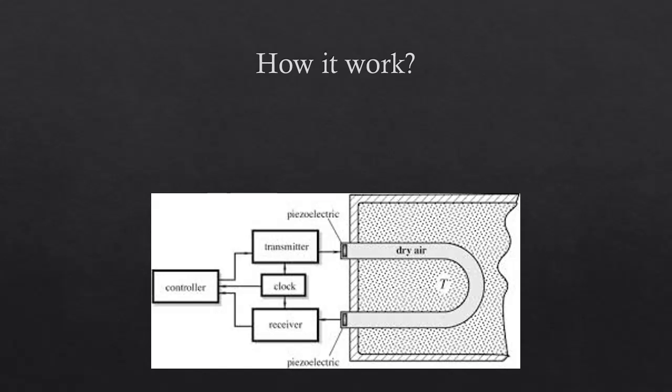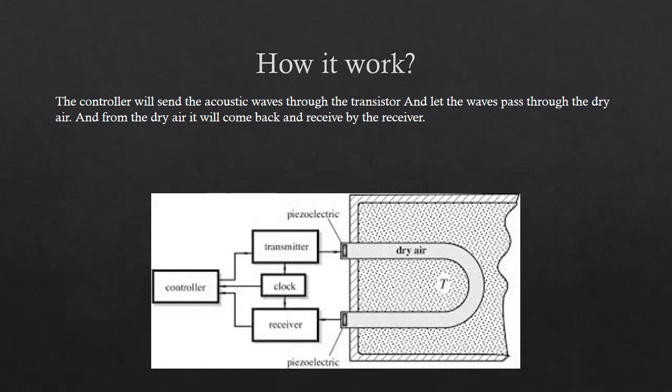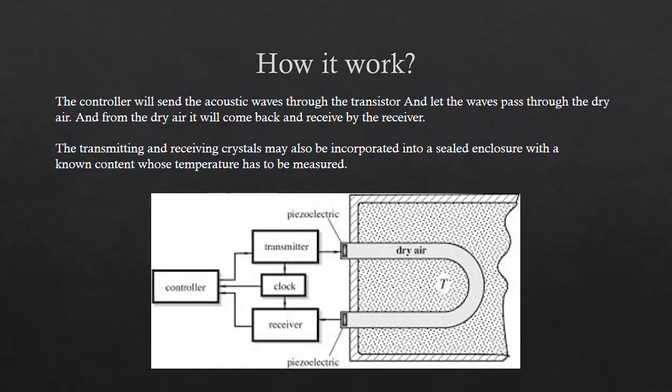Next, I am going to tell you about how it works. This is a photo about how it works. Firstly, the controller will send Acoustic wave through the transmitter and let the wave pass through the dry air. And from the dry air, it will come back and the receiver will receive it. The receiver gives the signal to the controller. The transmitter and receiver will also be incorporated into a sealed enclosure for the non-contact temperature measurement.